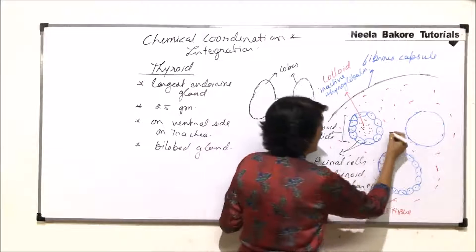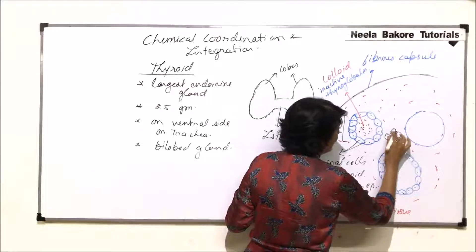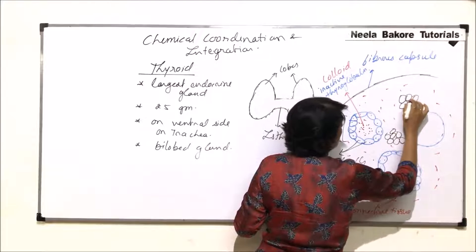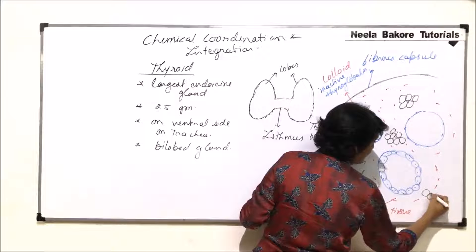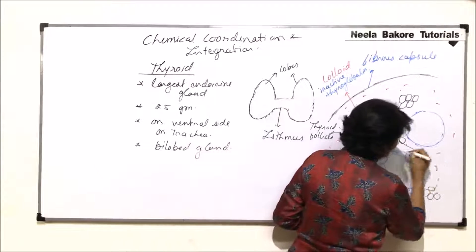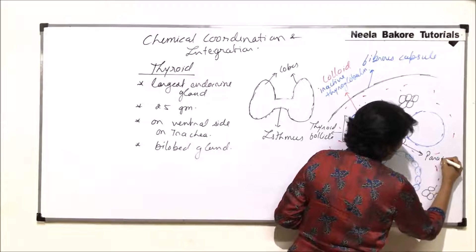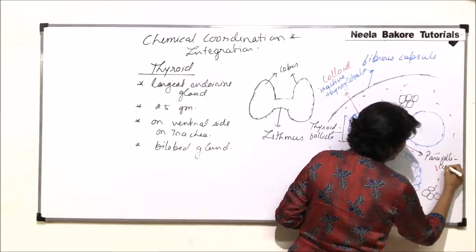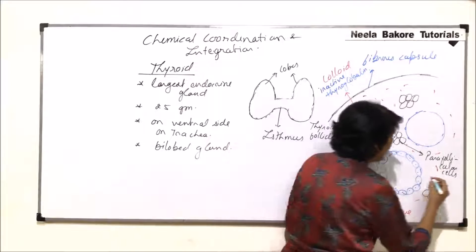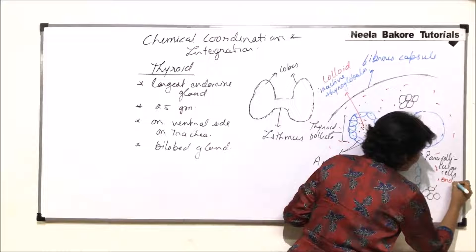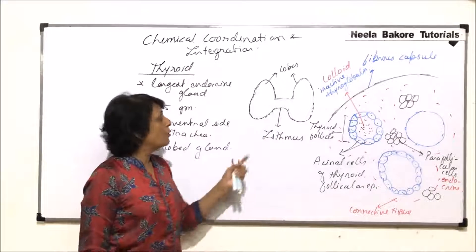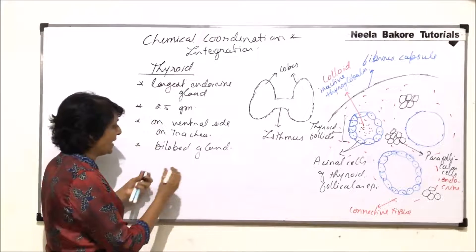In the connective tissue between these thyroid follicles, there are a few scattered cells. These cells are known as parafollicular cells. They are also endocrine in function — they are also endocrine cells.